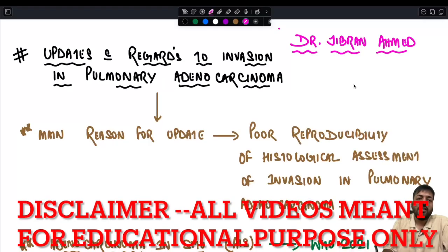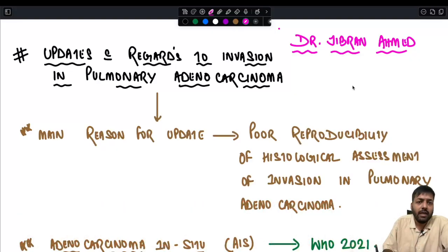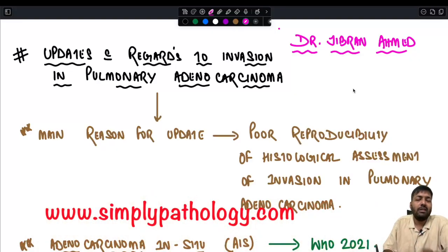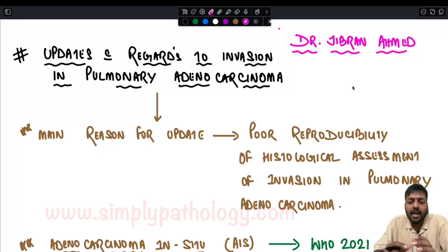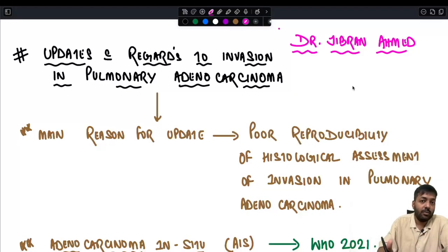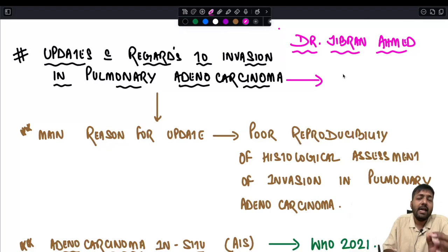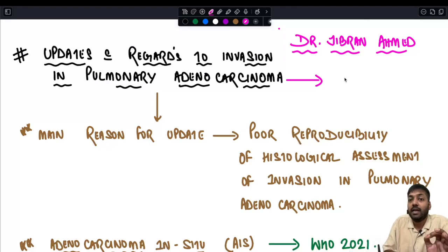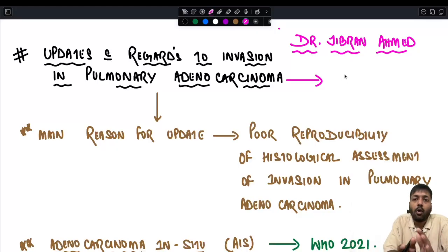Doctor Gibran Ahmad presents Simply Pathology. Today we are back with a very important session — we are going to read about recent advance 27, a very major update regarding invasion in pulmonary adenocarcinoma. This particular update is highly anticipated in this year's MD and DNB examination, which will be conducted in September, October, and November.